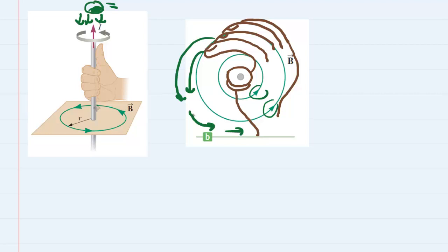The fingers are curled in a clockwise direction with the right hand. Then the thumb, as you're grabbing the wire, would naturally be pointing out of the page. Because the thumb is pointing out of the page, the current will also be pointing out of the page. If we wished to symbolize out of the page, we would draw a purple dot right at the location of the wire. So the correct answer is that the current in part B is pointing out of the page.